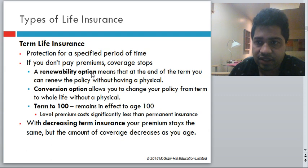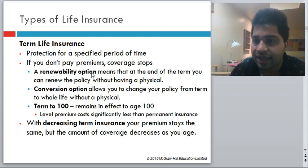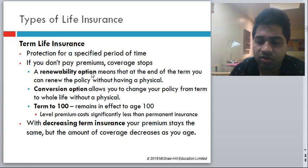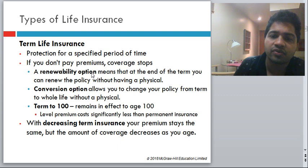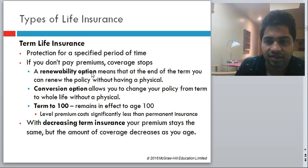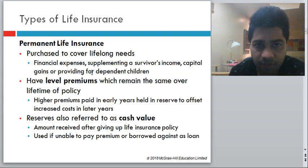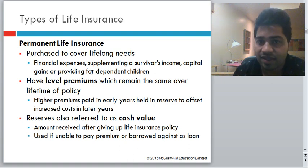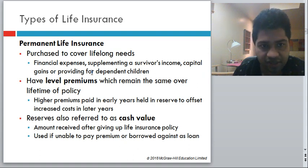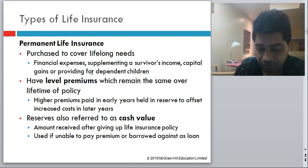Overall, the premium cost for Term-100 is quite lower than getting multiple term insurances up to age 100. There is also decreasing term insurance, in which your premium stays the same but the amount of coverage decreases as your age increases. Permanent life insurance is purchased to cover lifelong needs — financial expenses, supplementing a survivor's income, capital gains, or providing for different children. It has level premiums that remain the same over the lifetime of the policy, but the premiums are generally higher.